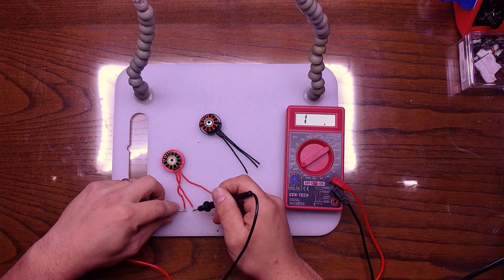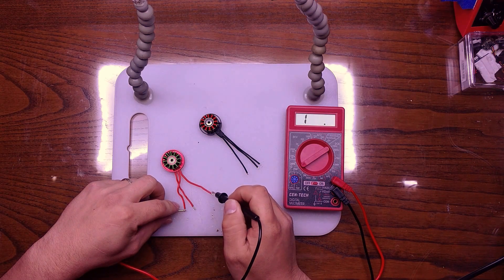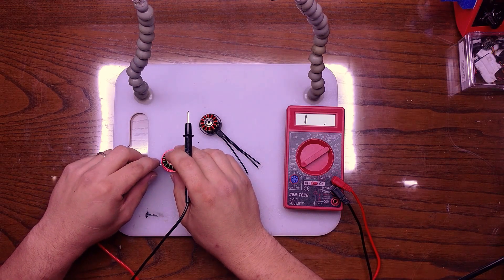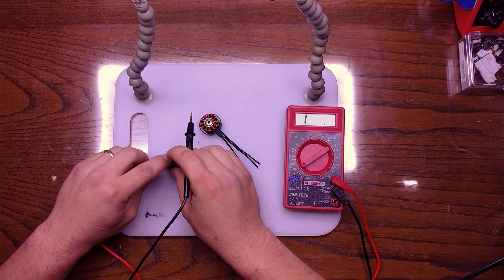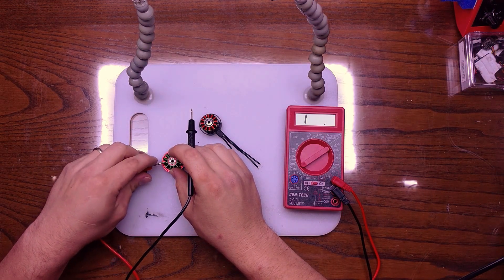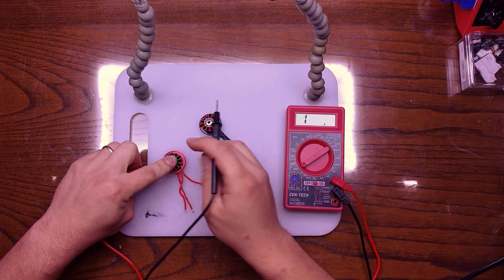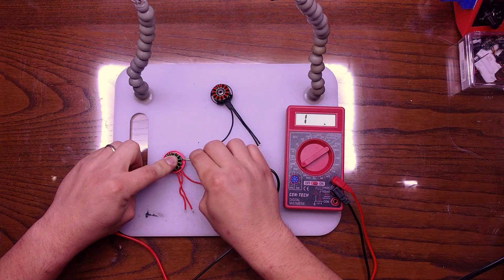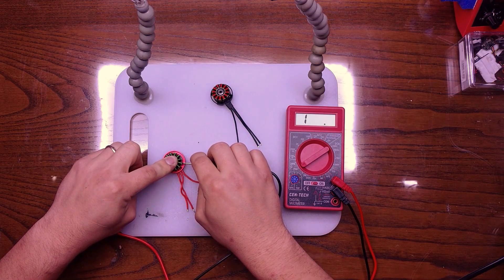As you can see, all these leads already have continuity because of the way that we've wound it. So what I'm going to do right now is make sure that I have a connection. I just hold it down with my finger and you want to see if you have a connection from your stator to your leads.